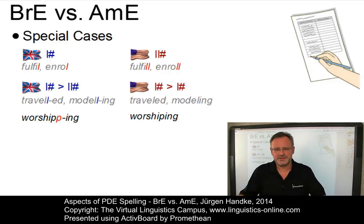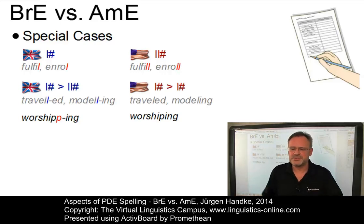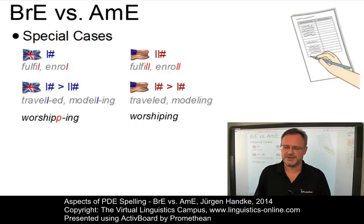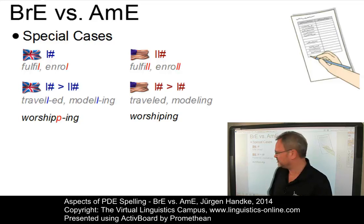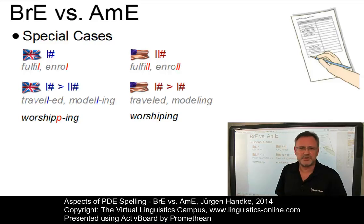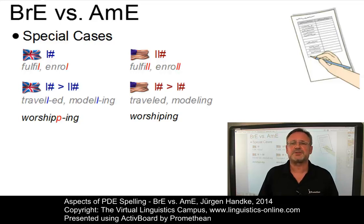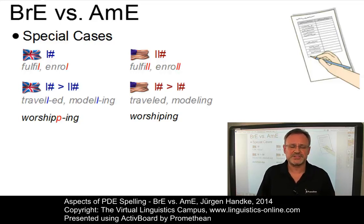So American English seems to be more rule-consistent than British English when it comes to doubling or not. If you want to find out details about the rule of consonantal doubling, consult the e-lecture about the morphographemic rules of present-day English spelling.